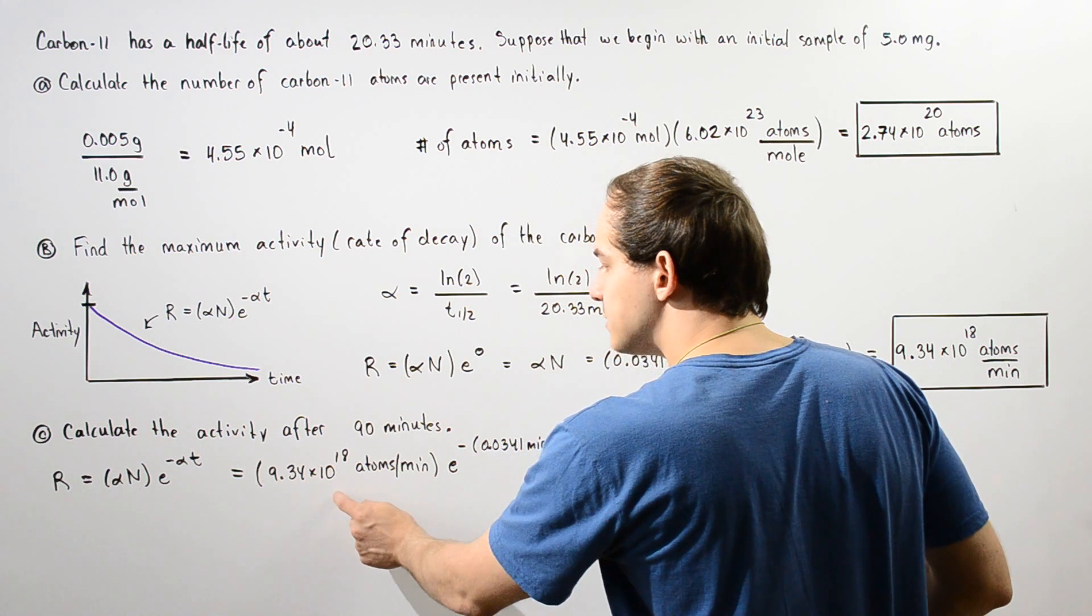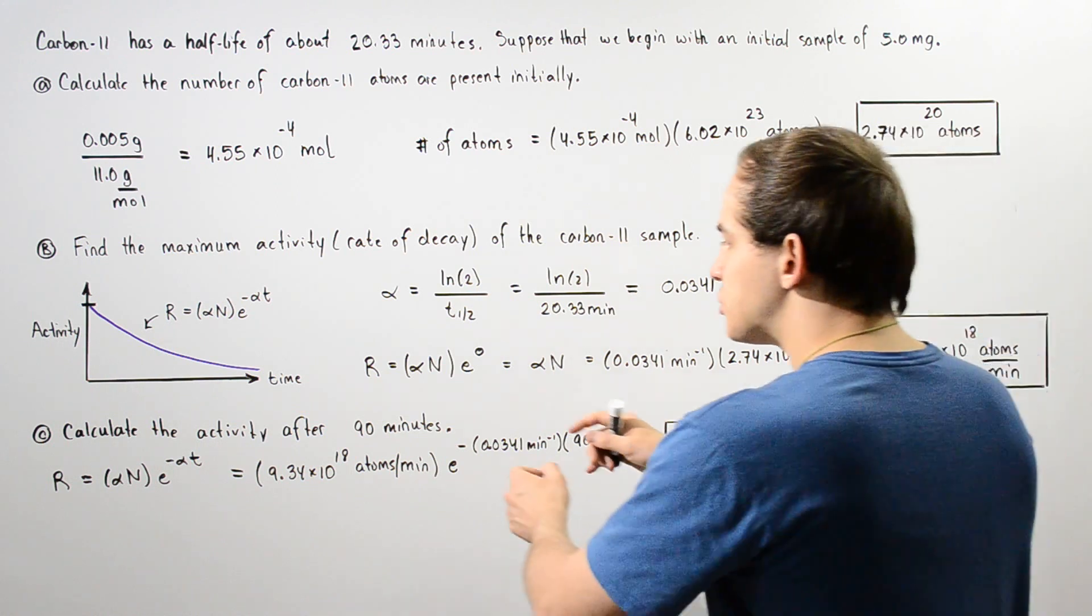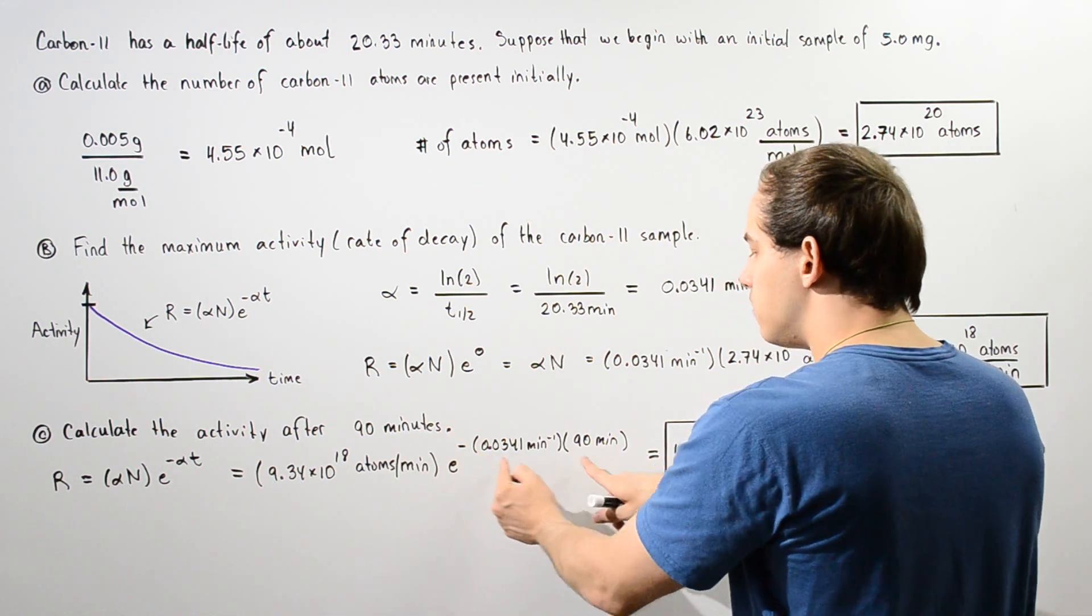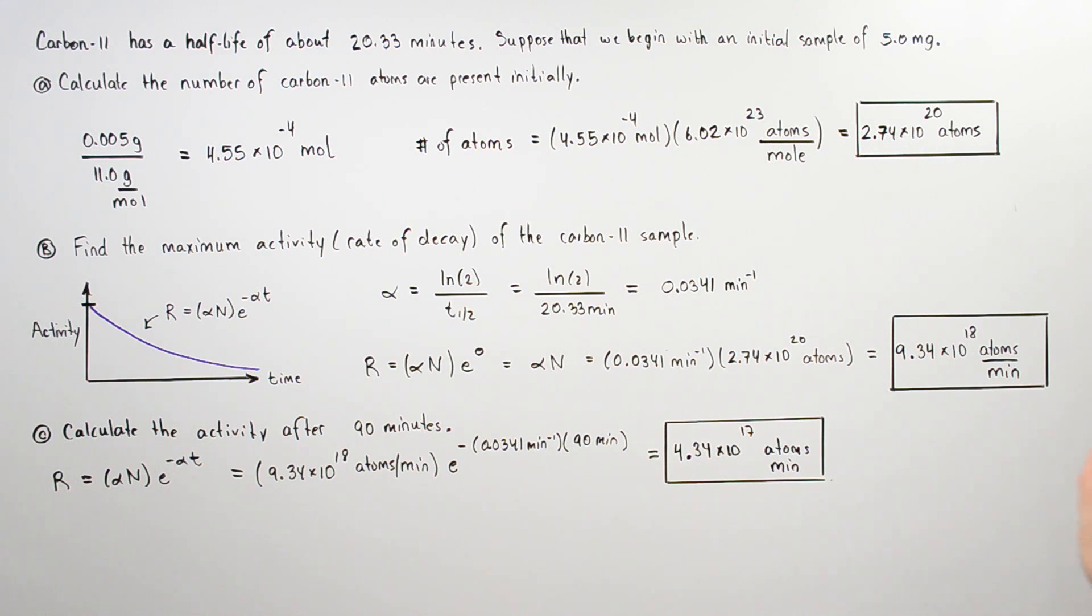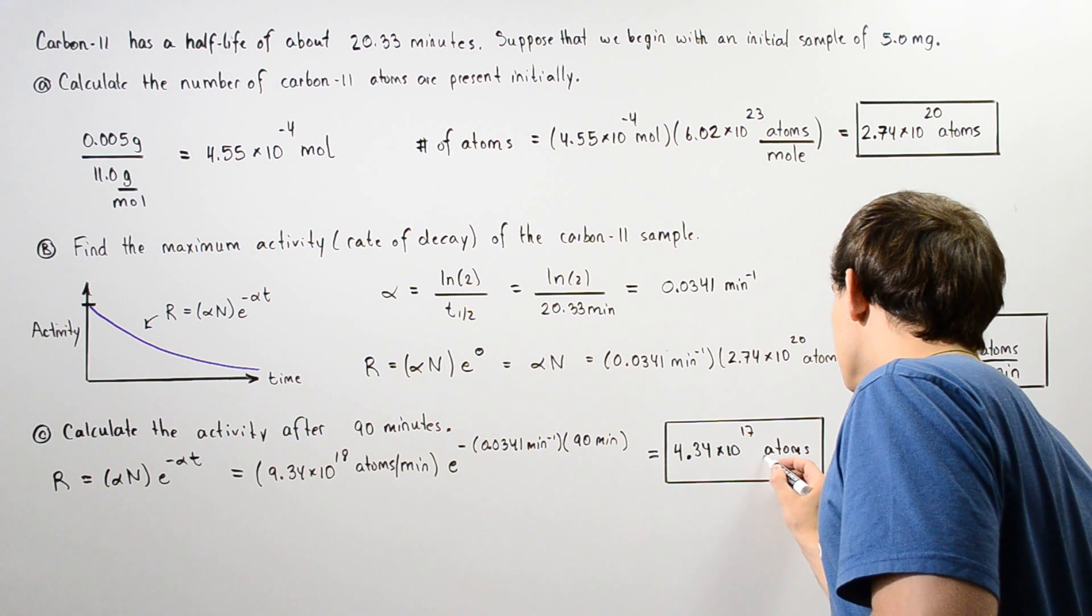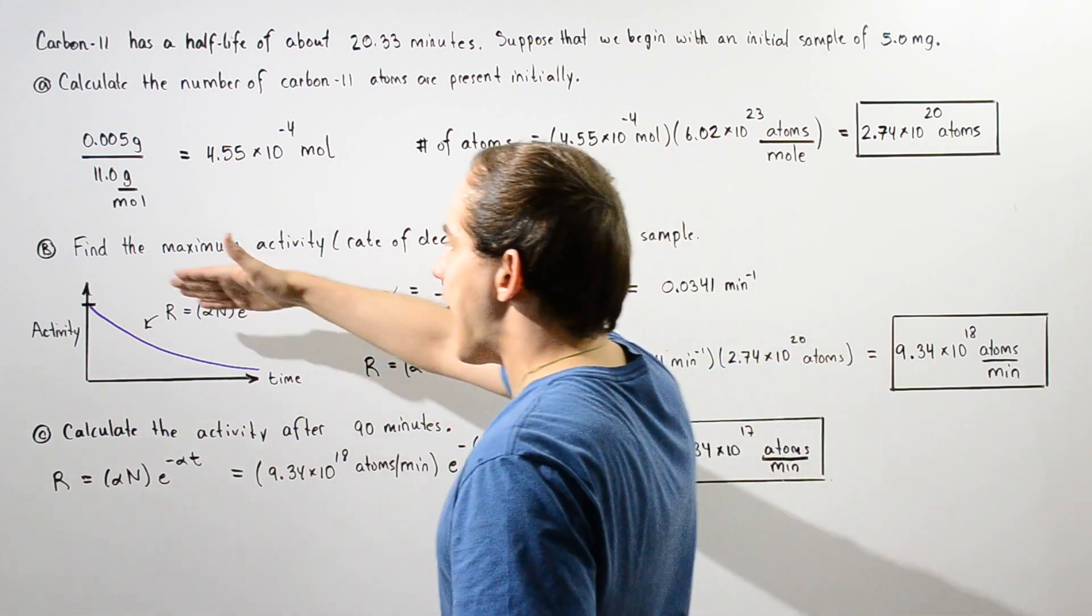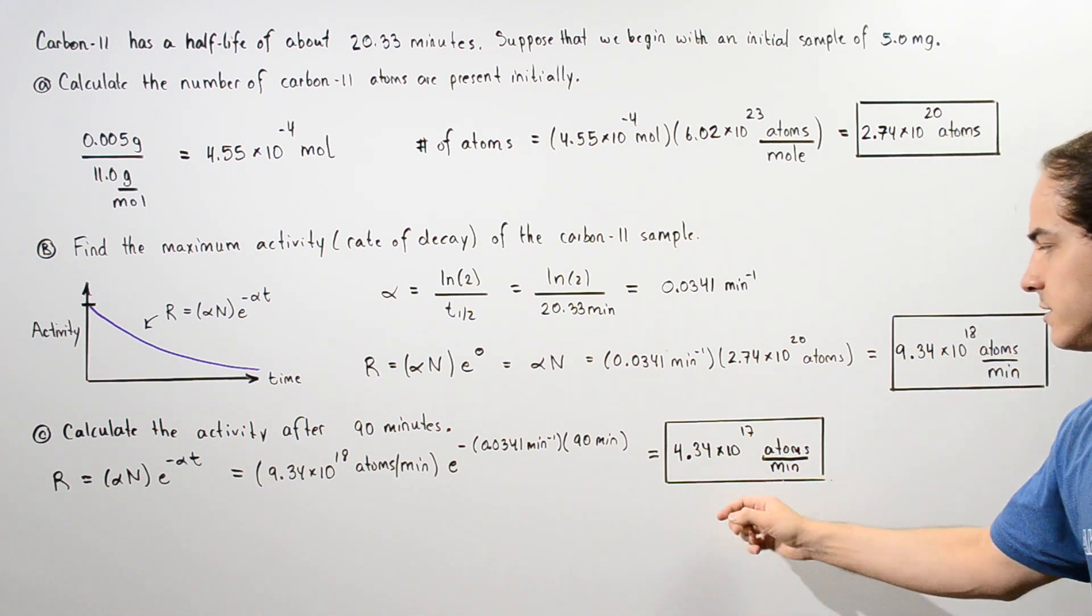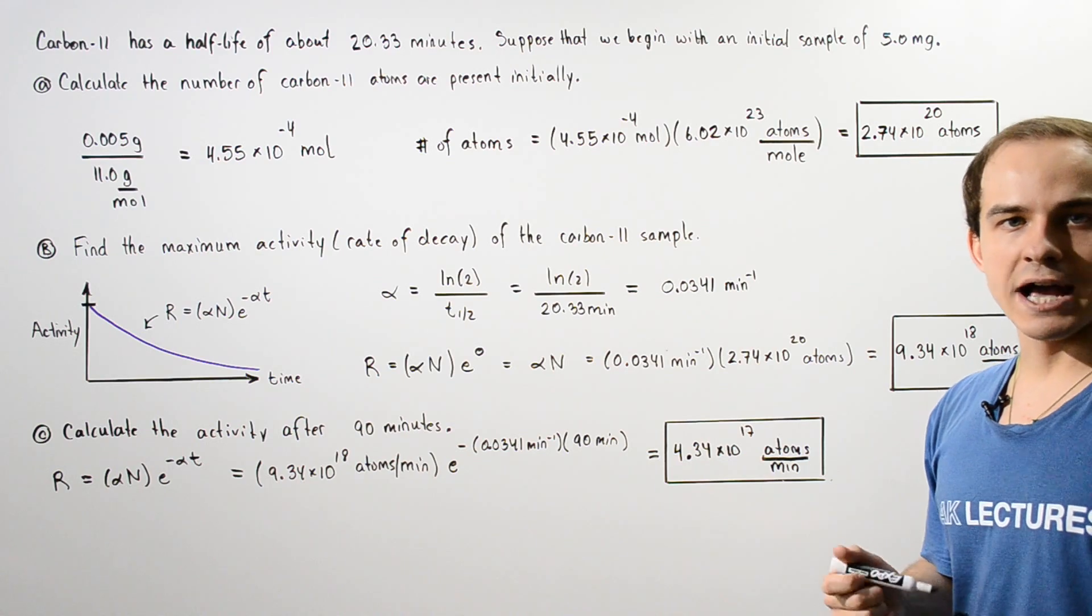So 9.34 times 10 to the 18 atoms per minute is simply our maximum activity, which is given by alpha times N. And we multiply that by e to the negative alpha multiplied by 90 minutes. And we get about 4.34 times 10 to the 17 atoms per minute. We basically see from this curve that as the time progresses, our activity decreases. And that's exactly why these two values are different. As time progresses, the activity decreases as seen by this number. This is smaller than our initial activity of our isotope.